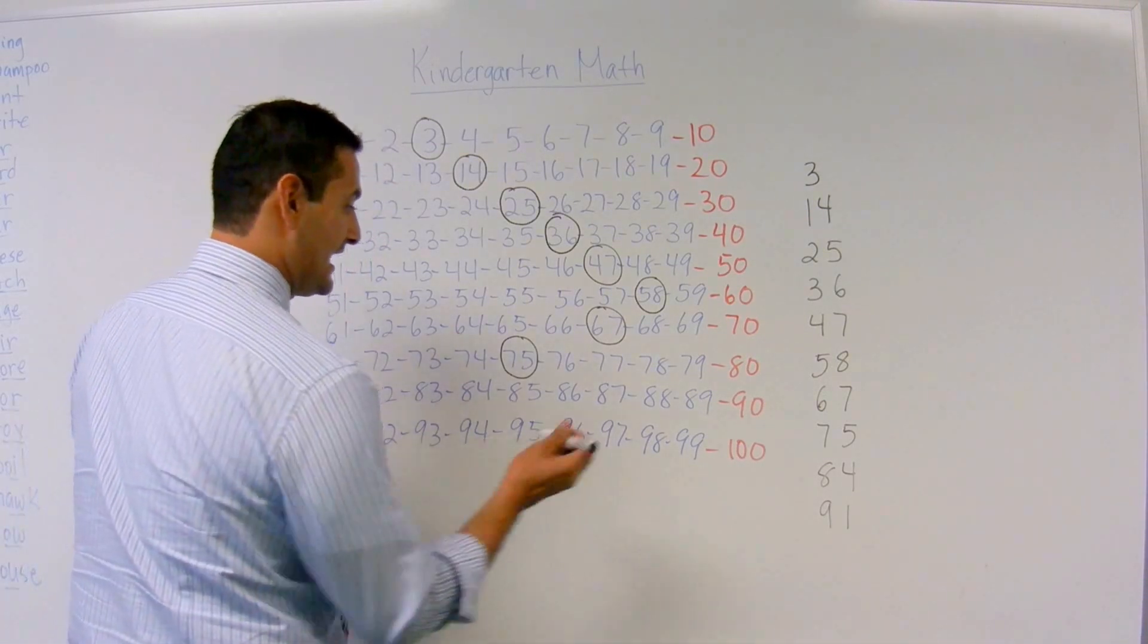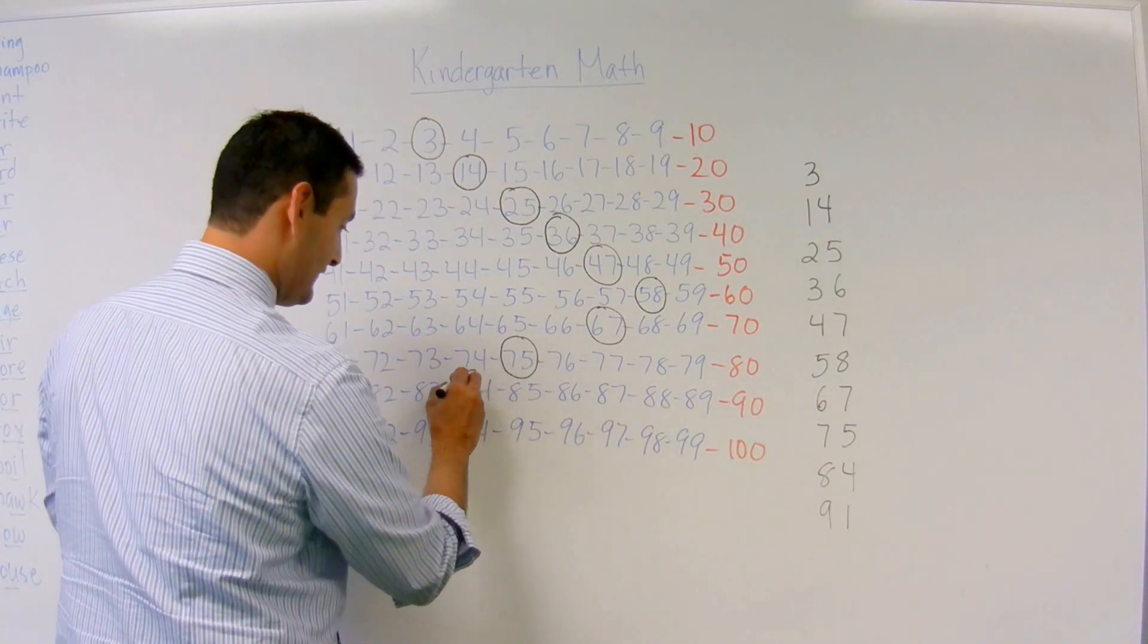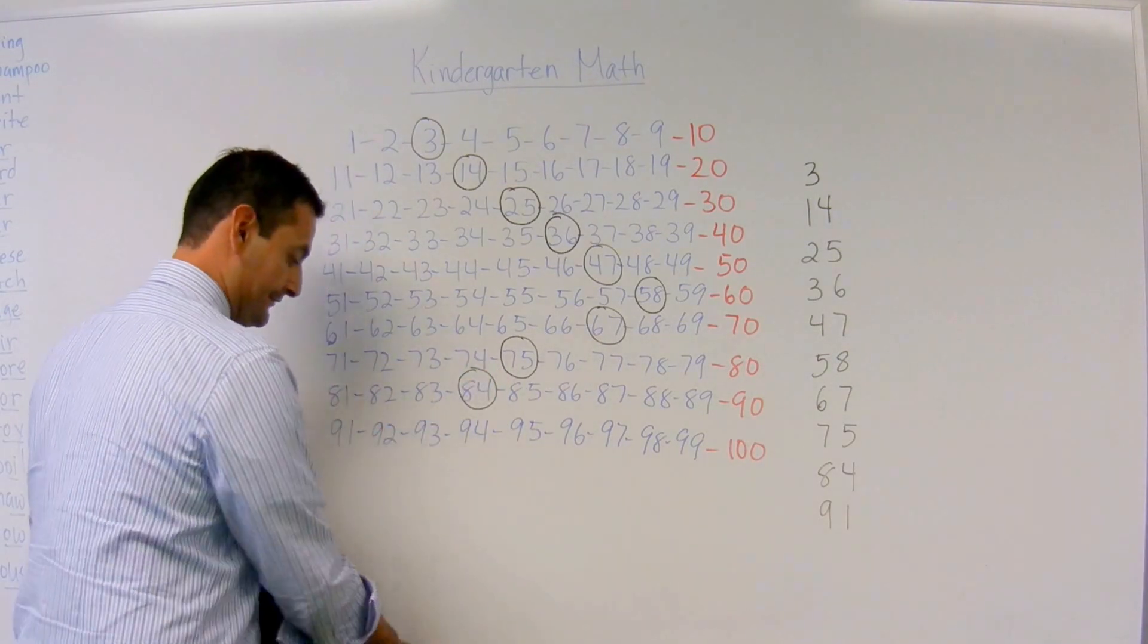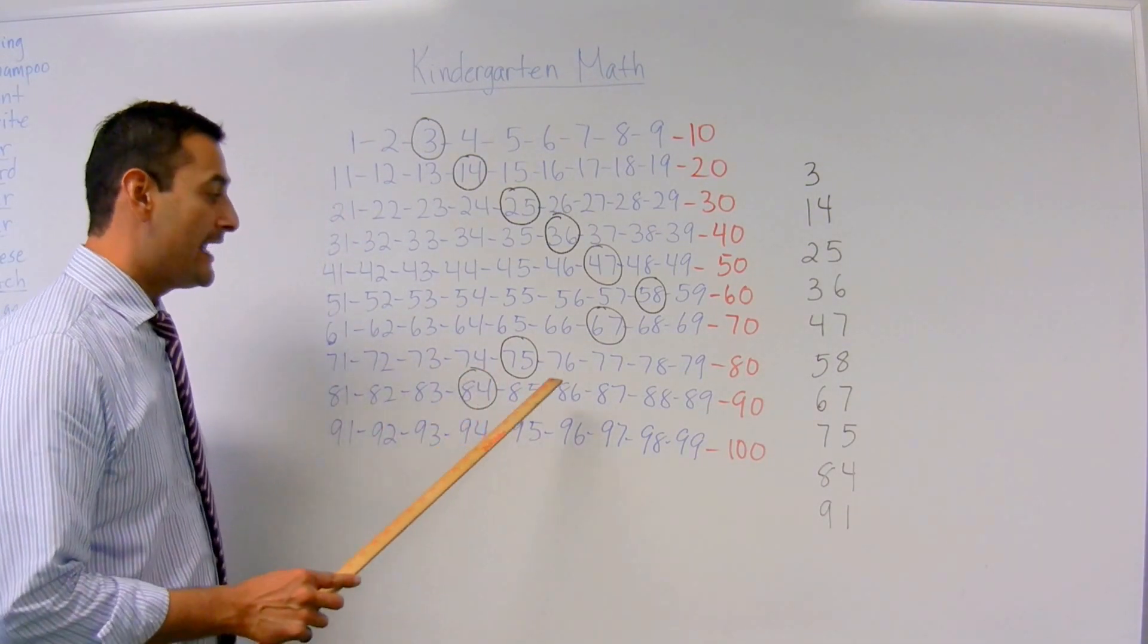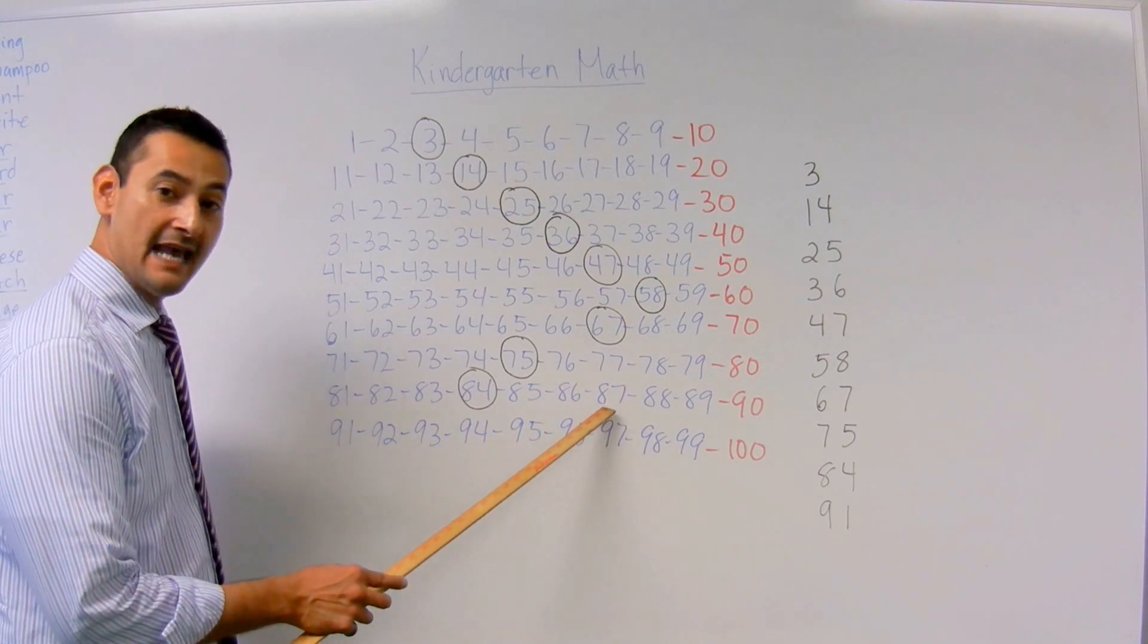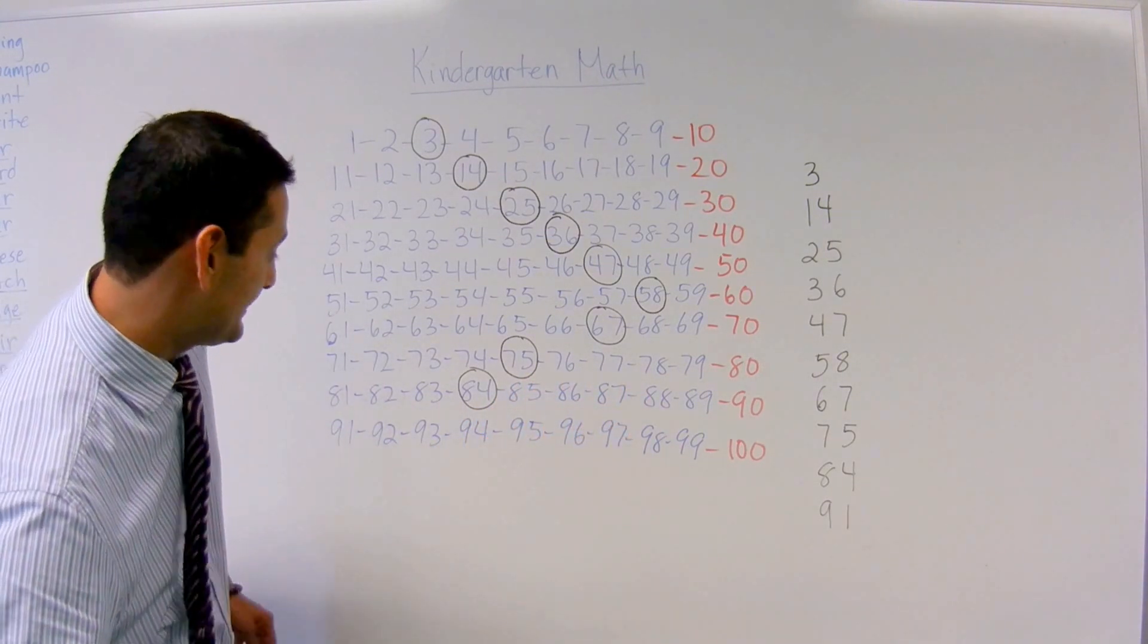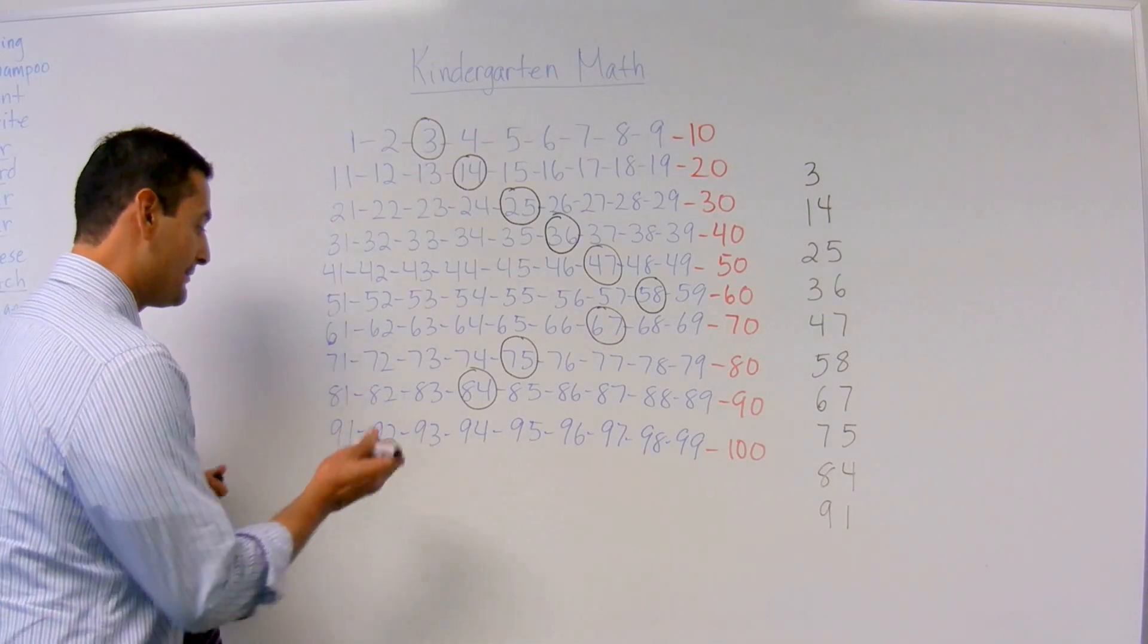Now let's go ahead and let's count. Let's start with number 84, which is right there. Ready? Let's do that. 84, 85, 86, 87, and we'll stop right there.